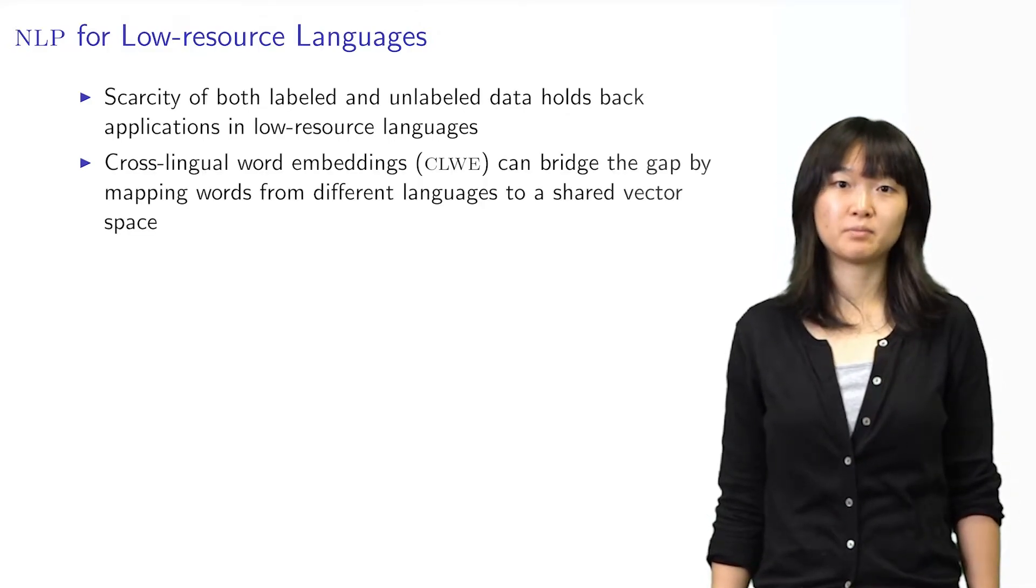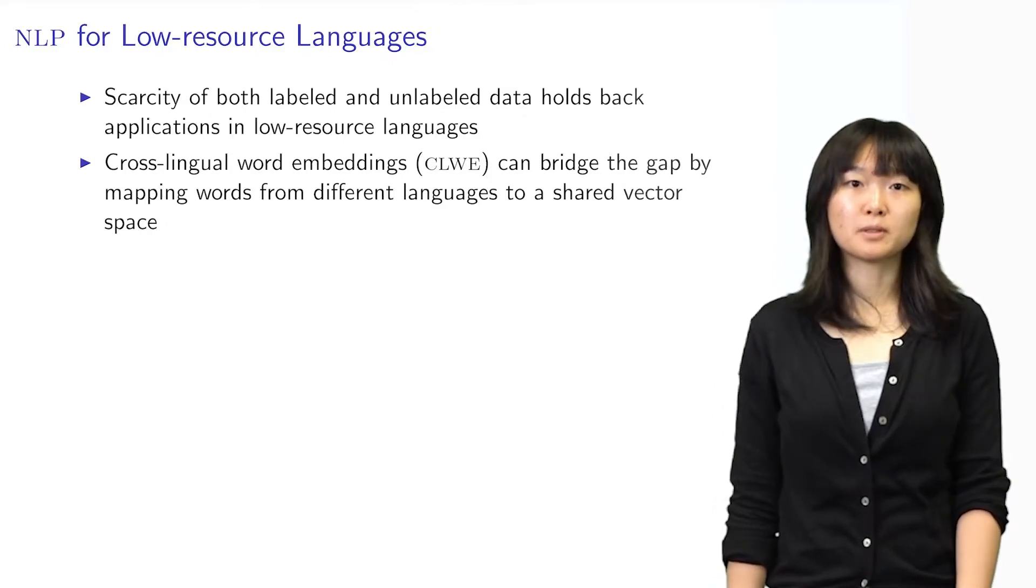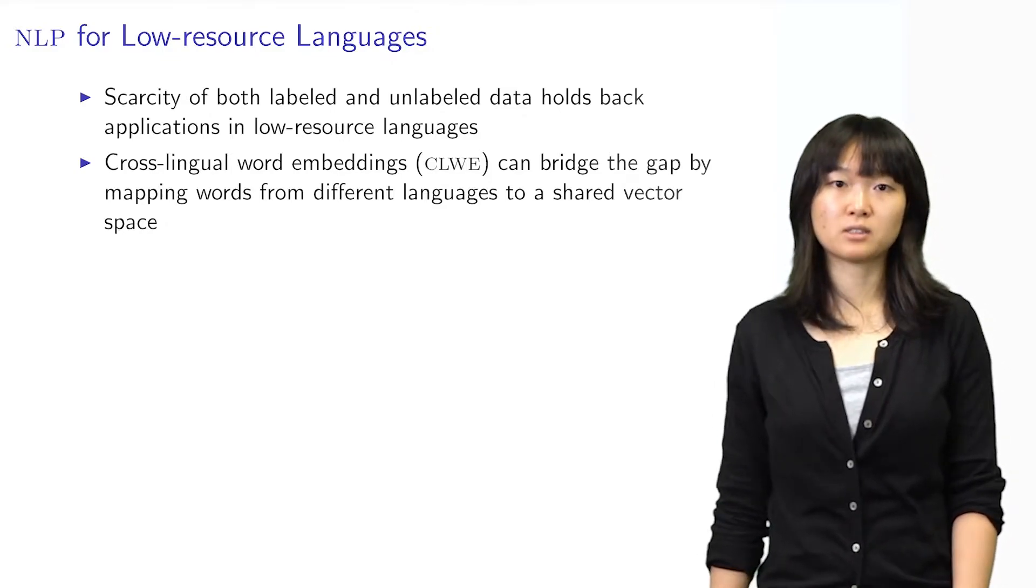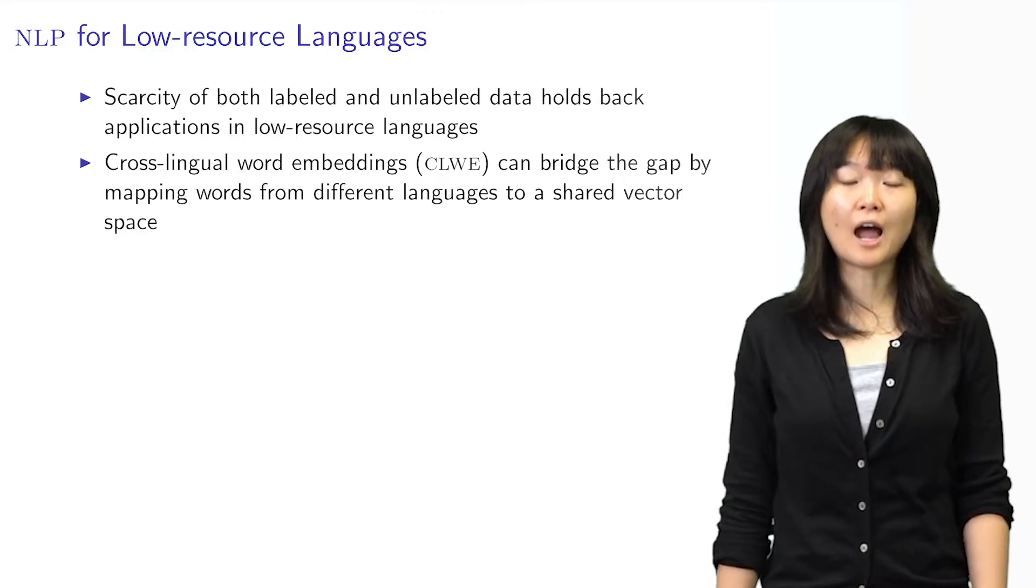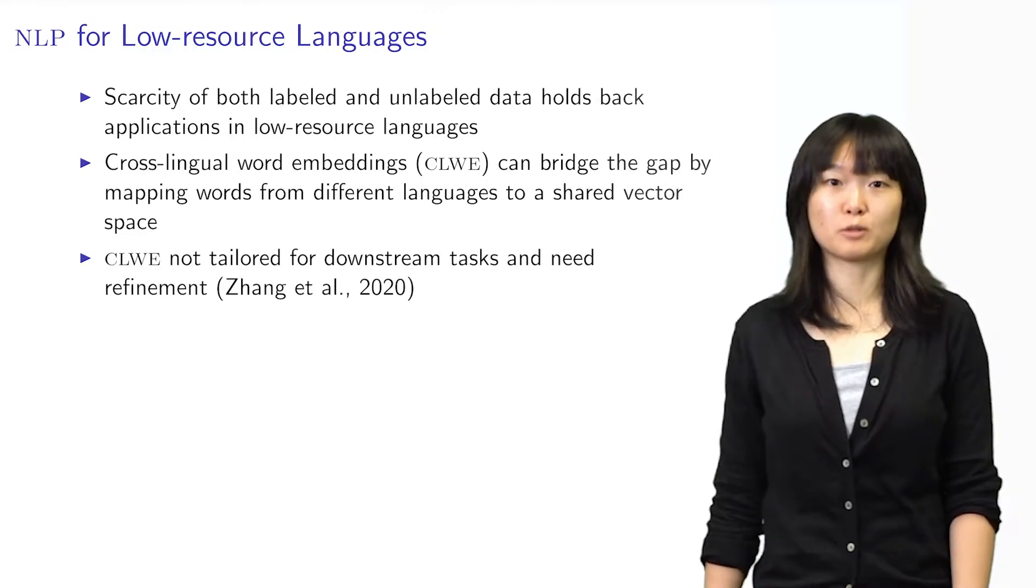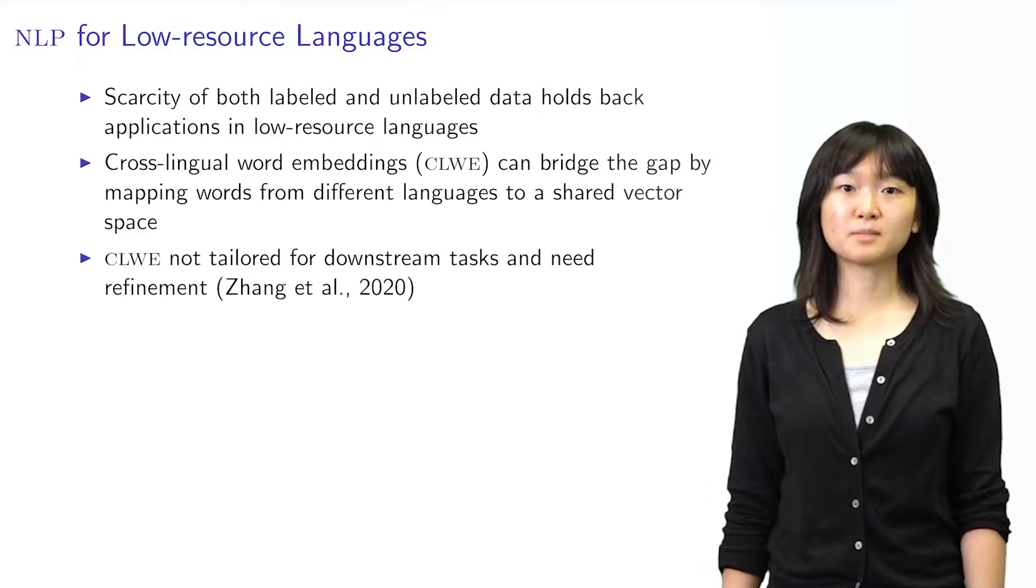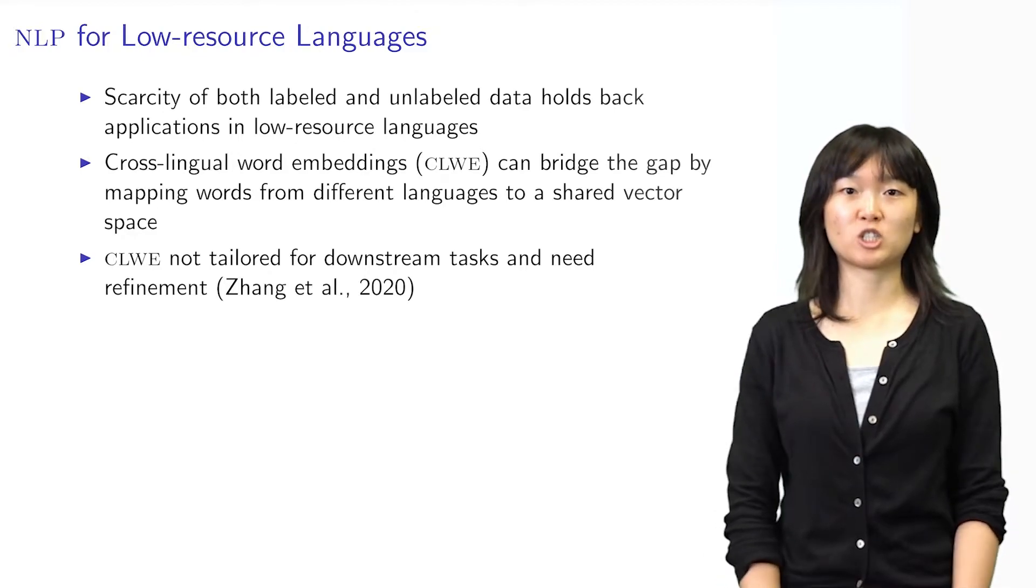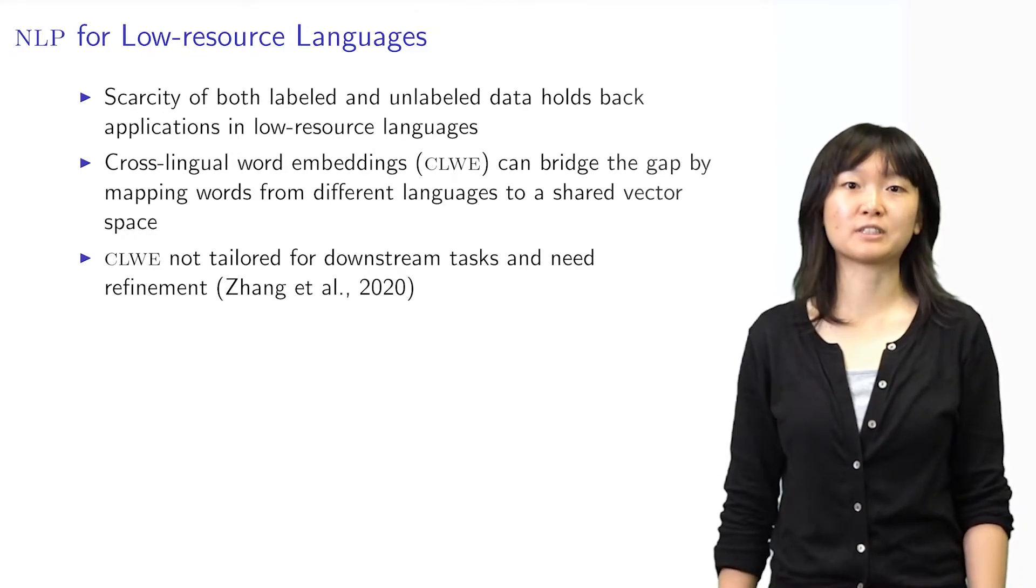Cross-lingual word embeddings can help. They map words from multiple languages to the same vector space so that models trained on high-resource languages can predict in low-resource languages. While these methods may have impressive word translation accuracy, they may not be tailored for downstream tasks.